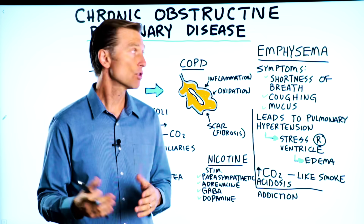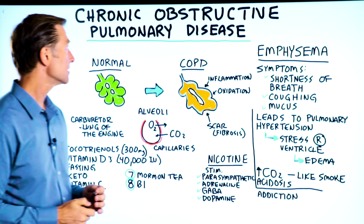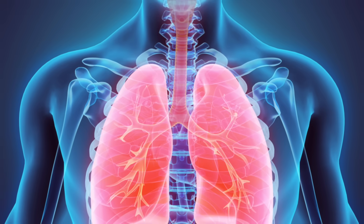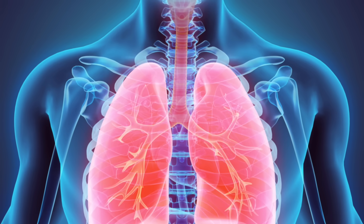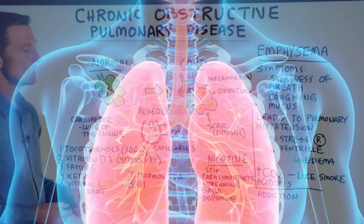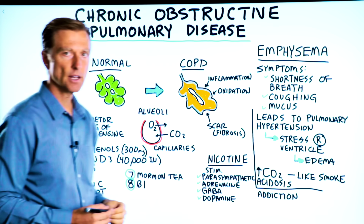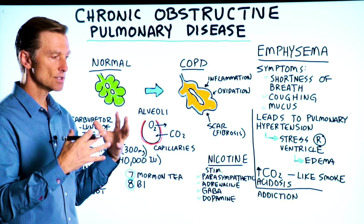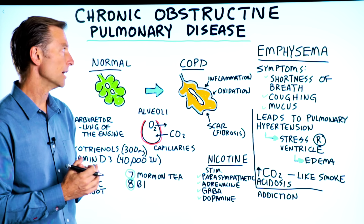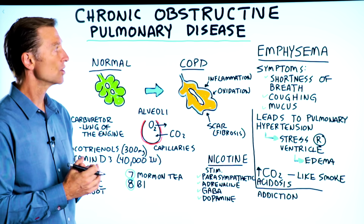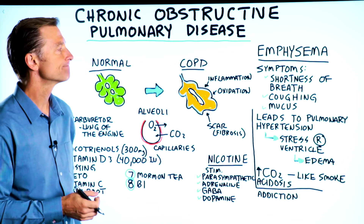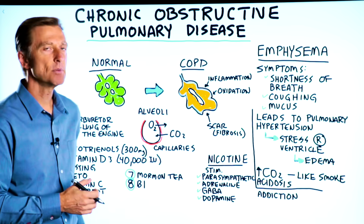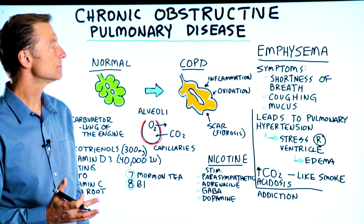Let's talk about COPD, chronic obstructive pulmonary disease. What does this word mean? It means that there's a lung disease that takes a bit of time to develop — that's the word chronic. Obstructive means you're not able to breathe to a certain degree. Another name for COPD is emphysema. Some of the symptoms — there's quite a few. The most common ones are shortness of breath, coughing, and mucus.